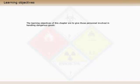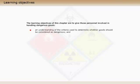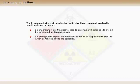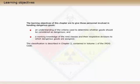The learning objectives of this chapter are to give those personnel involved in handling dangerous goods an understanding of the criteria used to determine whether goods should be considered as dangerous, and a working knowledge of the nine classes and their respective divisions to which dangerous goods are assigned. The classification is described in Chapter 2, contained in Volume 1 of the IMDG Code.